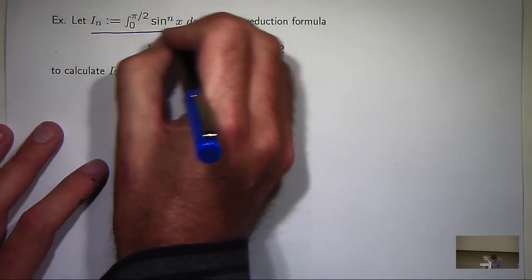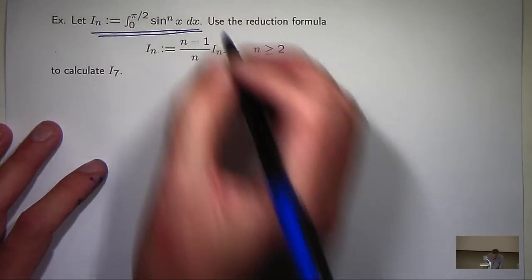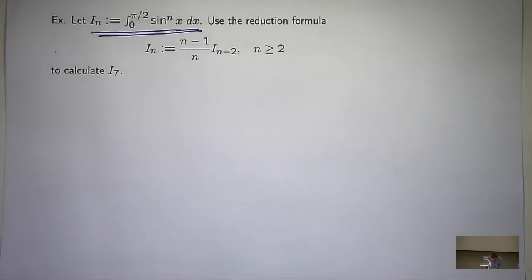Suppose we're given the following reduction formula for this integral. What we're asked to do is calculate I sub 7.